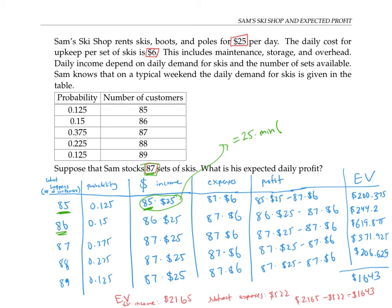So we need to multiply 25 by the minimum of the number of customers and the number of skis. In this case, that'd be the minimum of whatever's in this cell to the left—that might be like cell A2, for example, for the first one—and 87. And then we can drag that formula down, and it should correctly update to give us the rest of these income values.